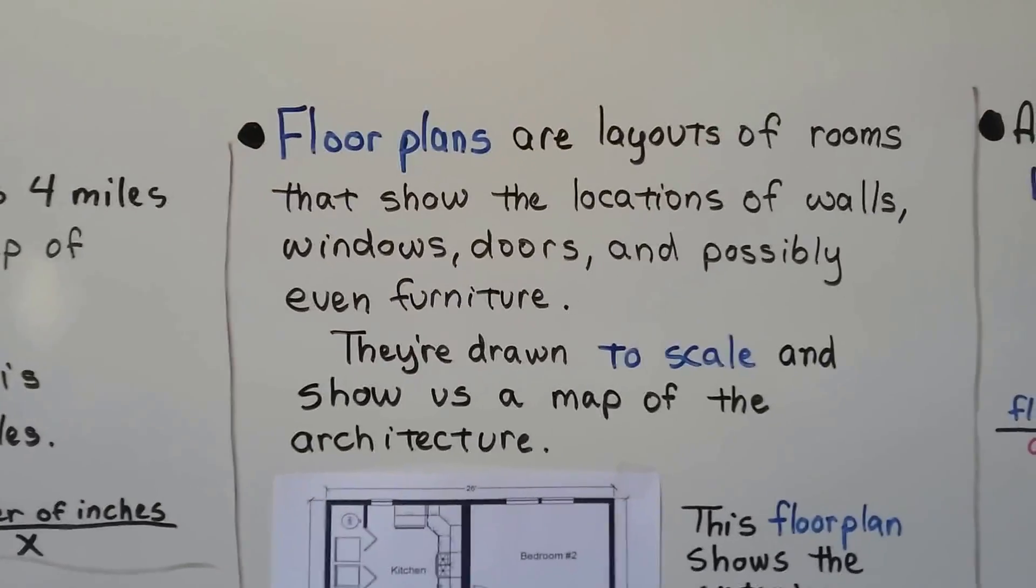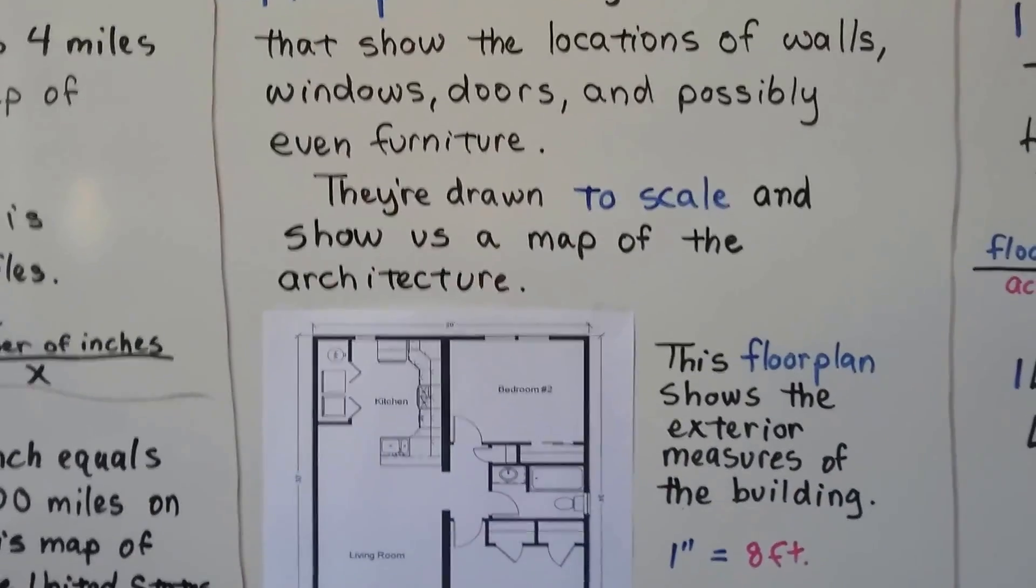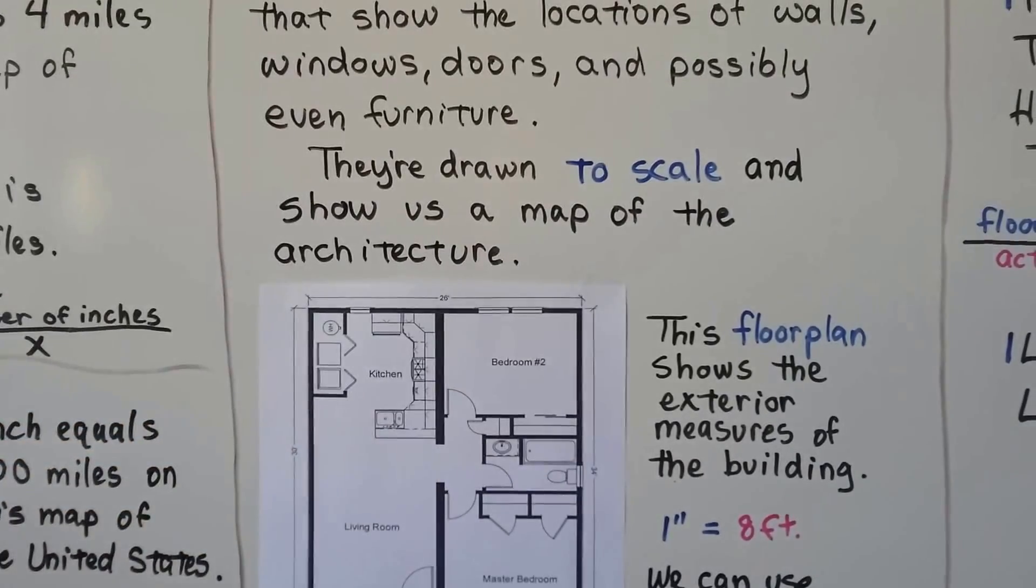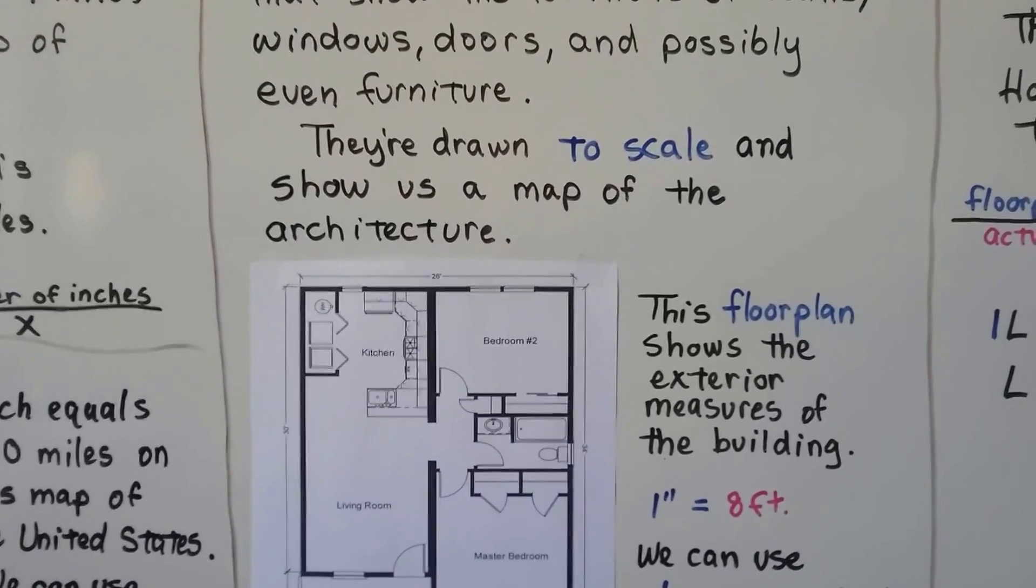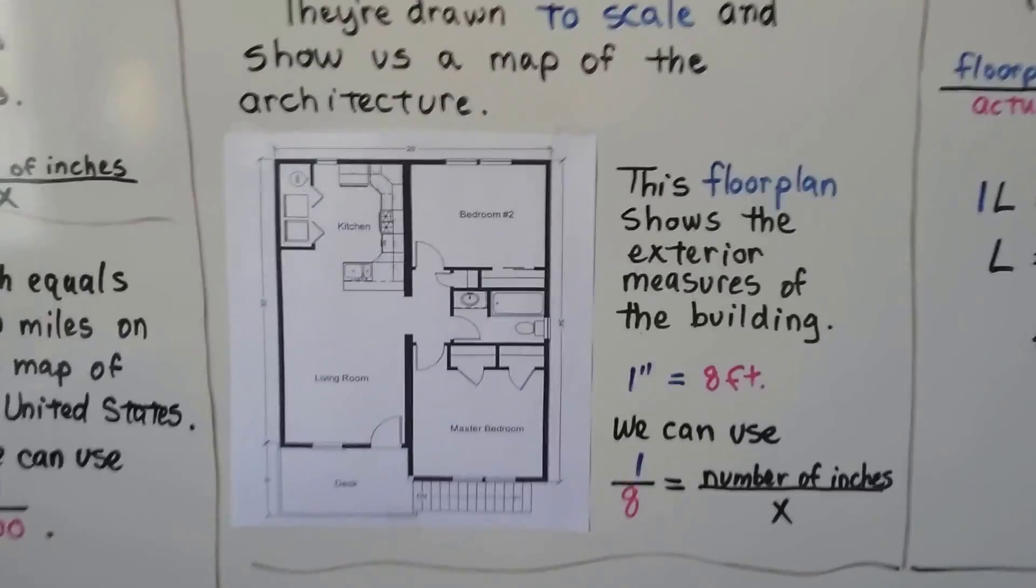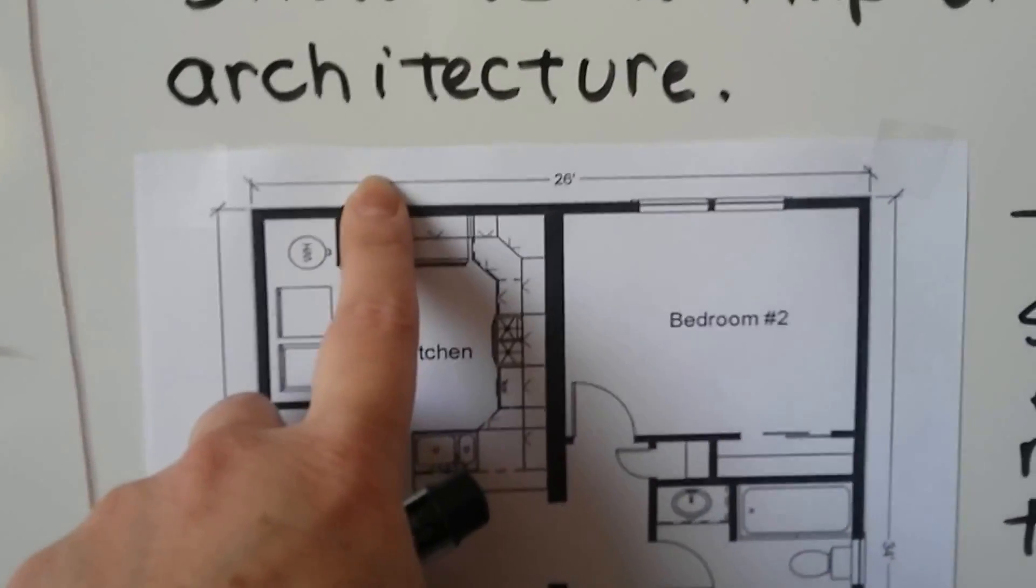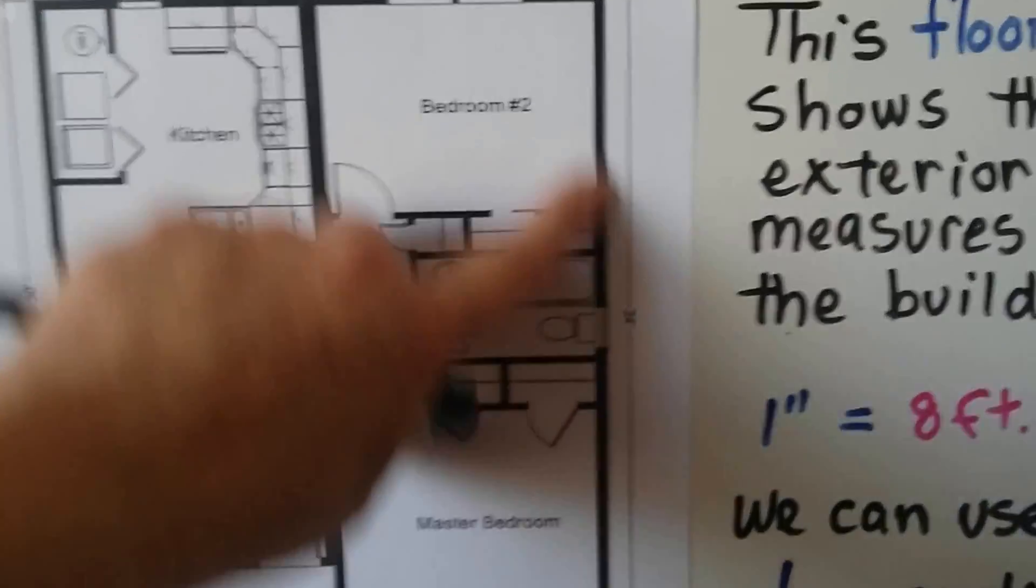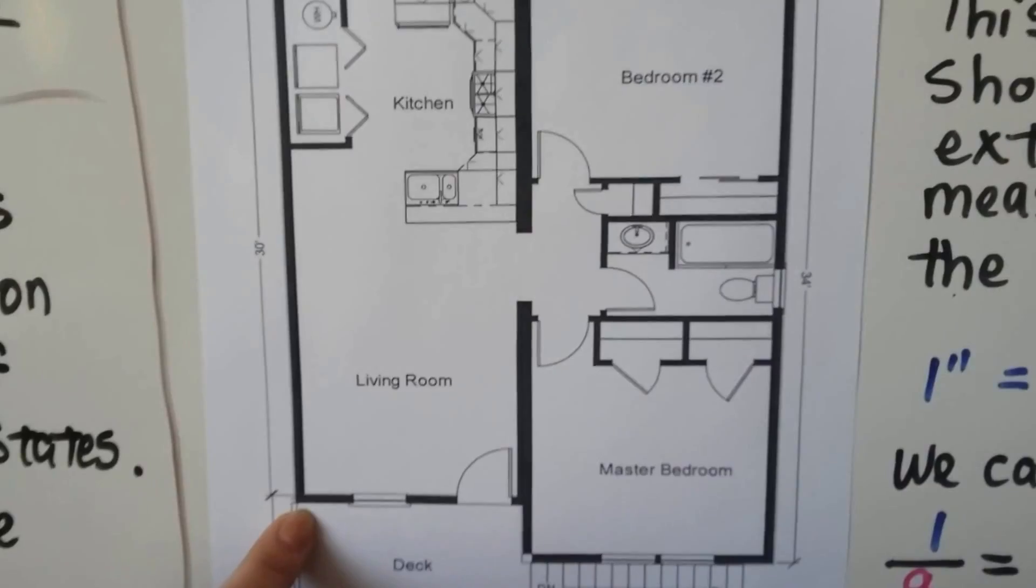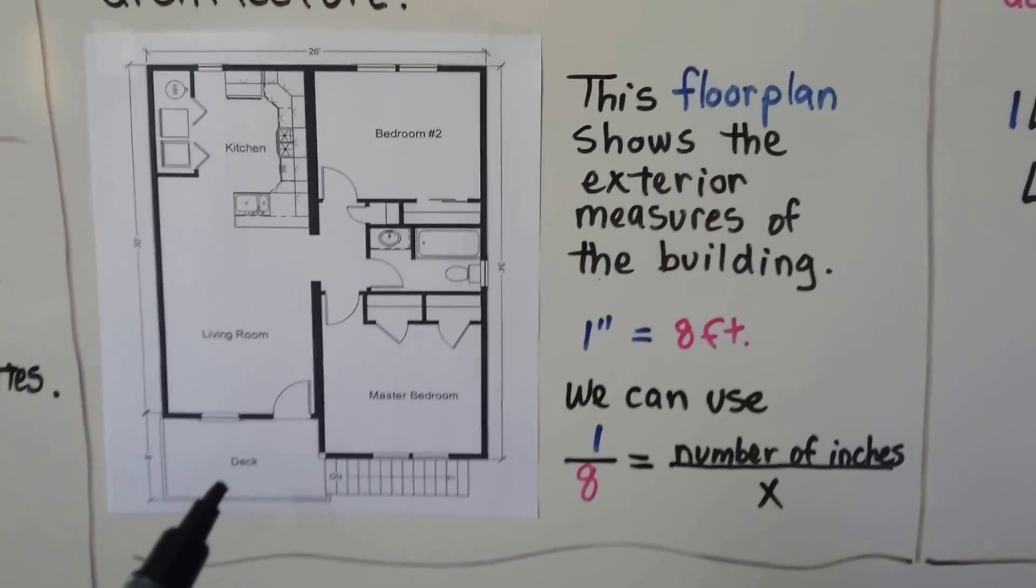Now, floor plans are layouts of rooms that show the location of walls and windows, doors, and possibly even furniture. This one shows washer and dryer and countertops and the bathroom, the sink and the bathtub and everything. And they're drawn to scale and show us a map of the architecture. And this floor plan shows the exterior measures of the building. If you look, it says that this is twenty-six feet across here. This is thirty-four feet this way. And it's thirty feet this way from this corner to the edge of the deck. And the scale is one inch equals eight feet.